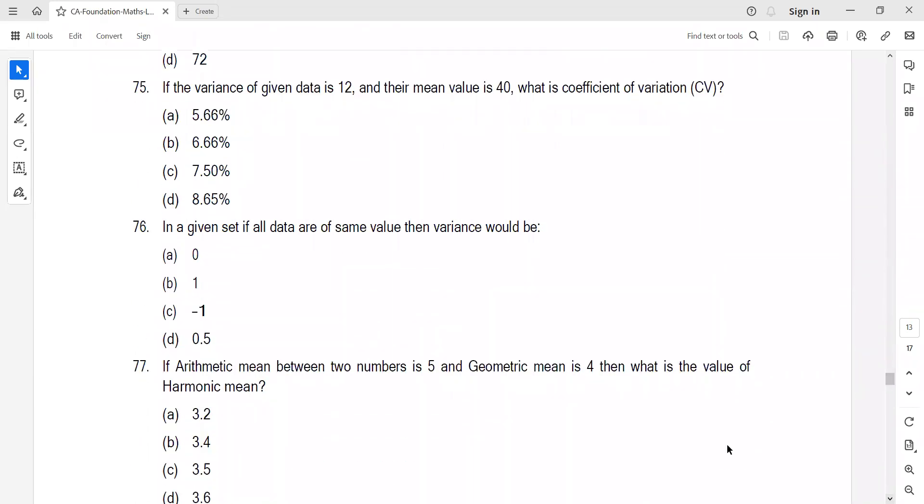If variance is 12 and mean is 40, coefficient of variance is standard deviation upon mean into 100. Standard deviation is root of 12 since variance is 12. Mean is 40. This becomes root of 12 by 40 into 100. Using calculators, this is approximately 8.66%, closest to 8.65%. Option C.